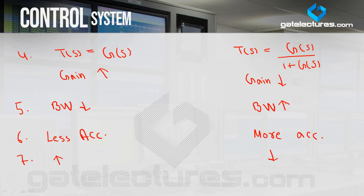These are some basic differences between open loop and closed loop systems. In closed loop we have considered negative feedback. Throughout the syllabus, maximum time we will consider negative feedback, because as you can see, it takes the least time to reach stability.